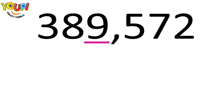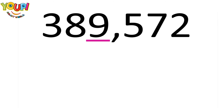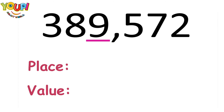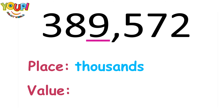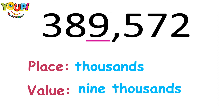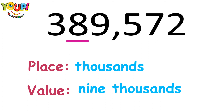Let's look at this number: 389,572. Try to do this example with me. Look at digit 9 — where is it placed in the place value chart? That's right, it's in the thousands place. Very good! What is its value? Very good — it's 9 times 1,000, which is 9,000. So the value of digit 9 is 9,000.